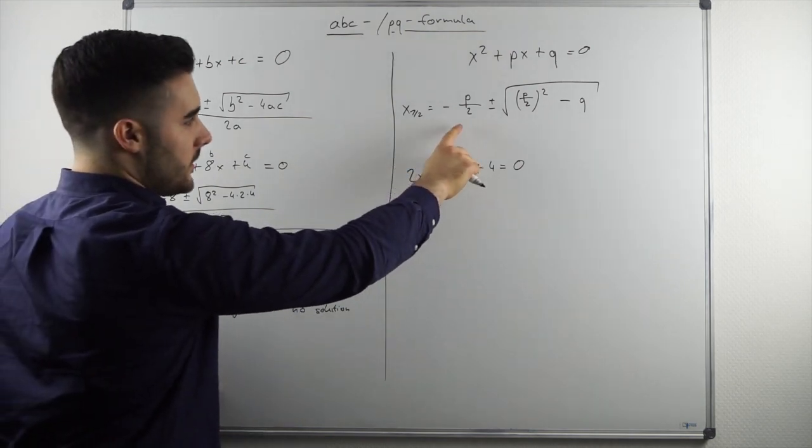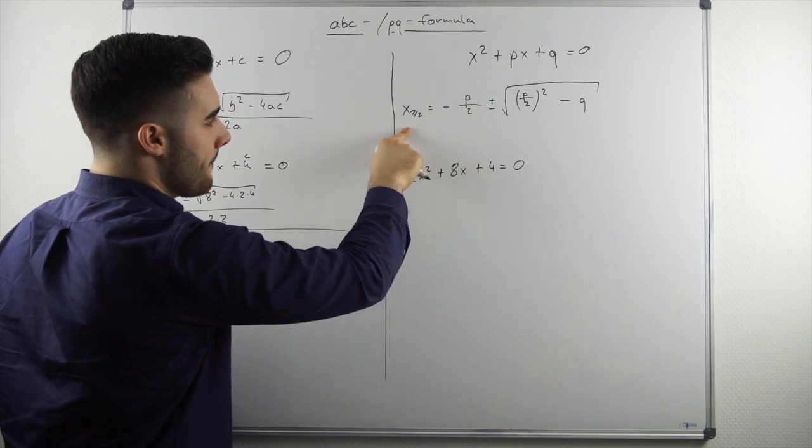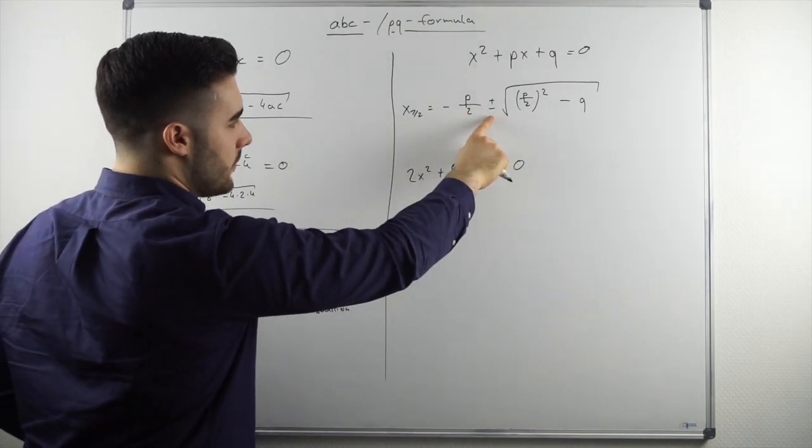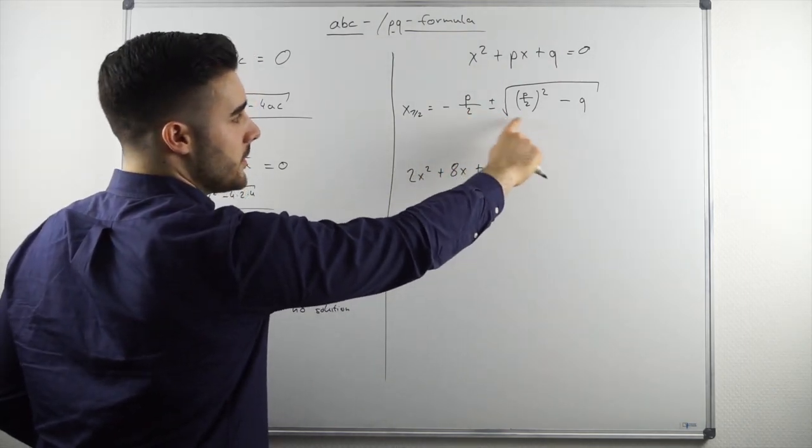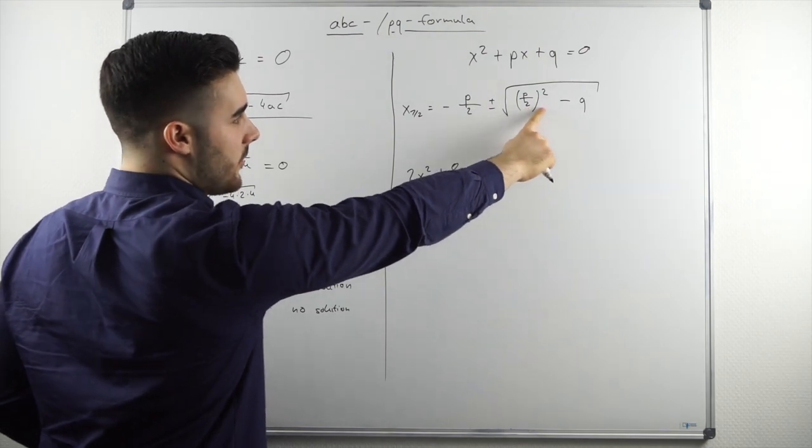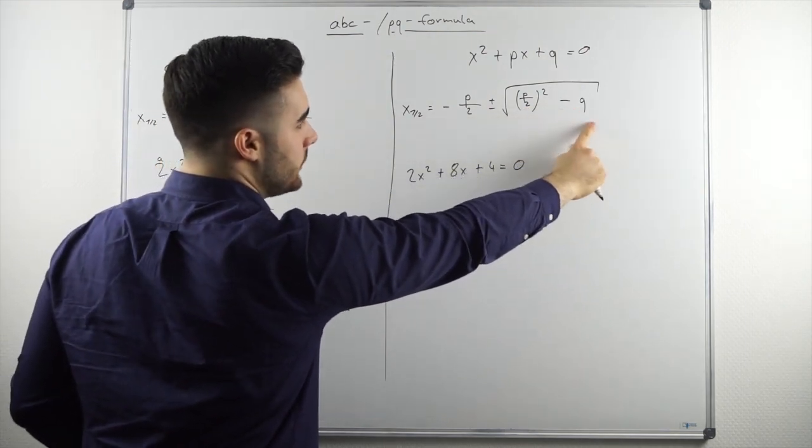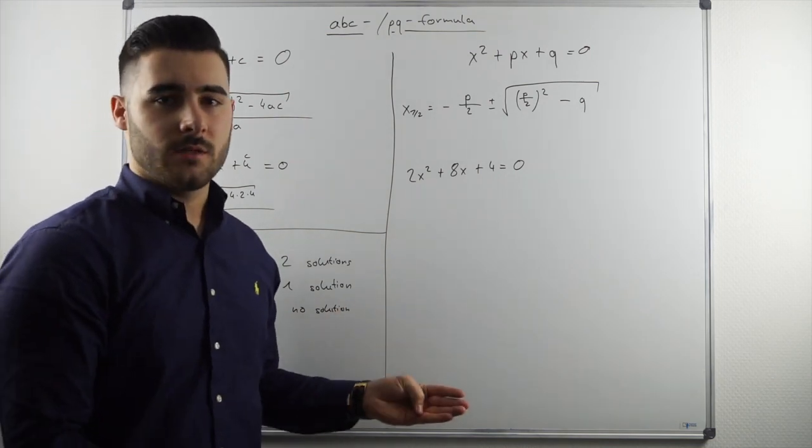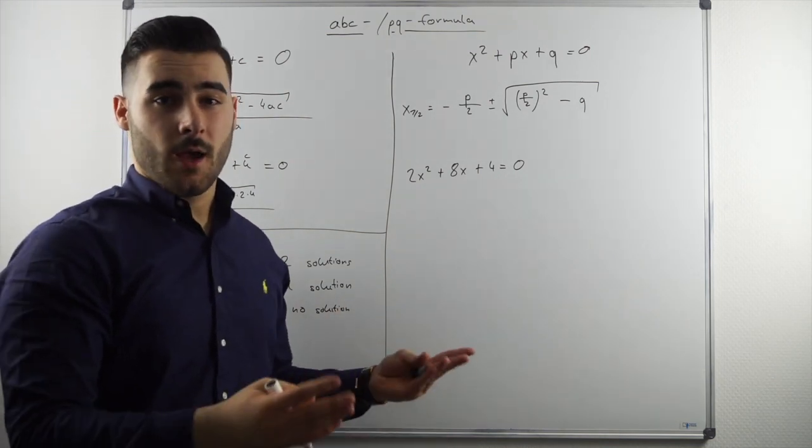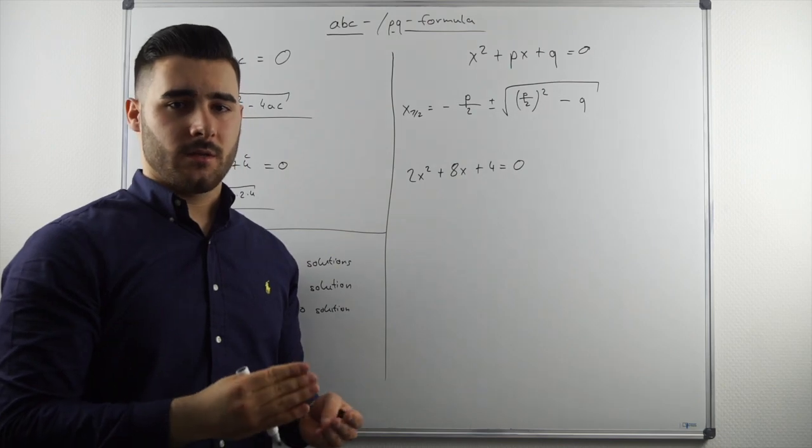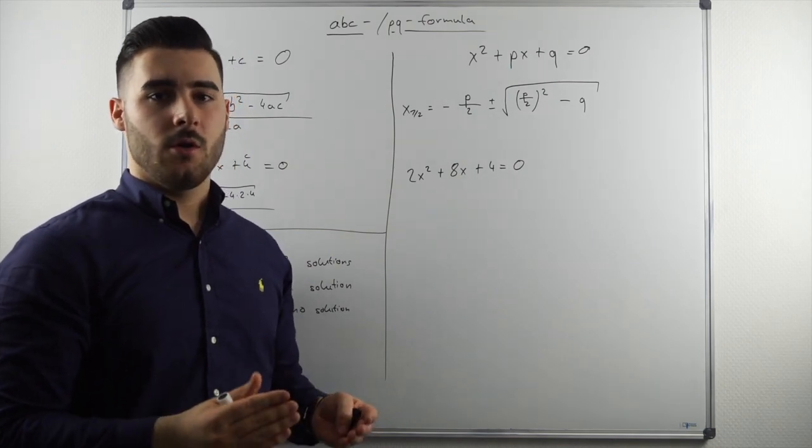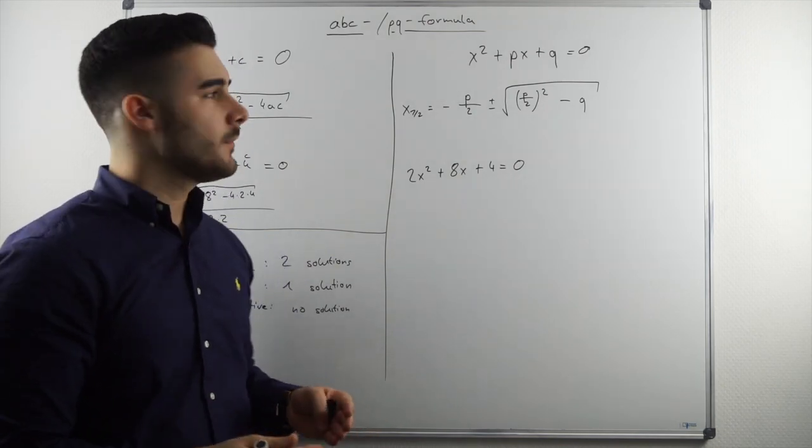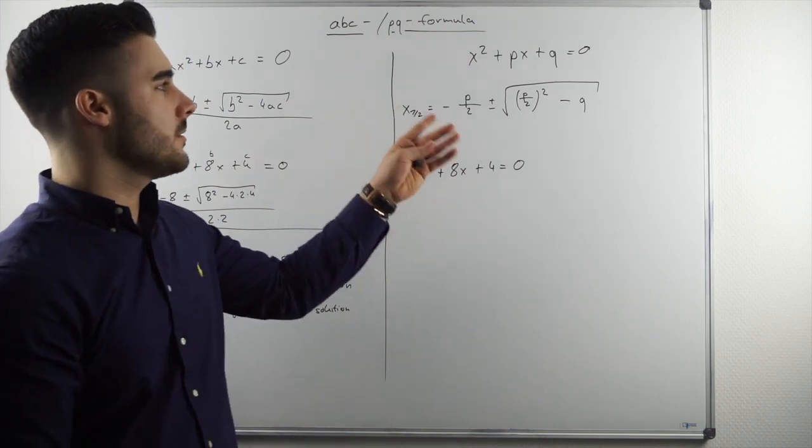So as I've already started, so p half plus minus the square root of p half squared minus q. And that's pretty much it. However, as I've already said in the beginning, I'm going to tell you which one I use the most. And I use the most the PQ formula.